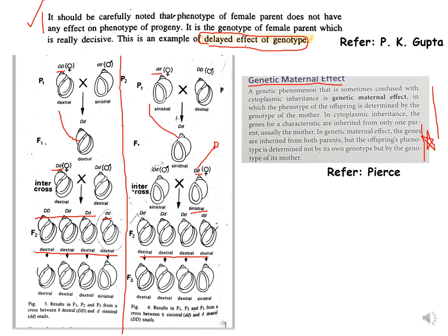In the reciprocal cross, when the female parent is sinistral and the male parent is dextral, F1 is all sinistral. In F2, all are dextral, and in F3 the ratio is three dextral to one sinistral. If you compare both crosses, from F2 and F3 the results are the same, but F1 results differ — F1 resembles the female parent in each case, like maternal inheritance.